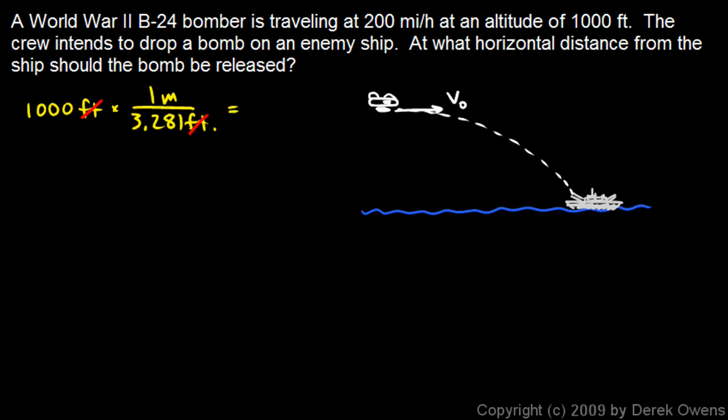And then the initial velocity is 200 miles per hour. So I'll multiply by 1,609 meters per mile, and the miles cancel out. And multiply by 1 hour per 3,600 seconds, and the hours cancel out. And that leaves me with meters per second. And when I multiply all that out, I get 89.4 meters per second.